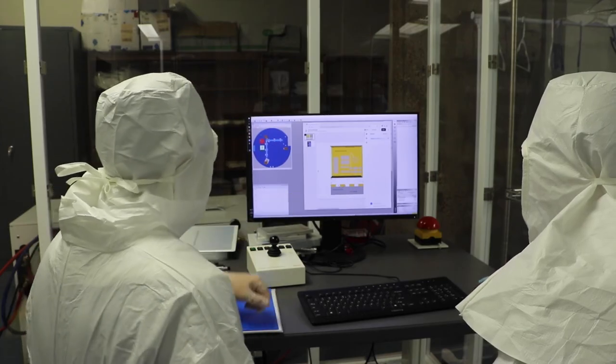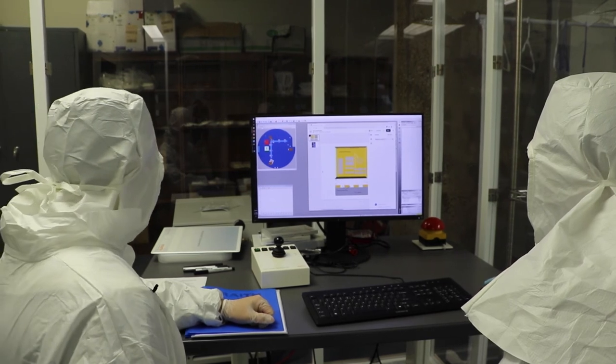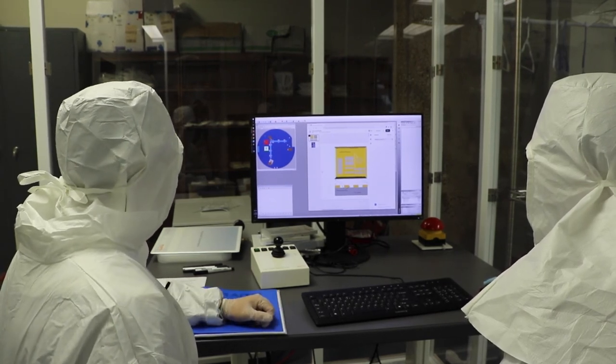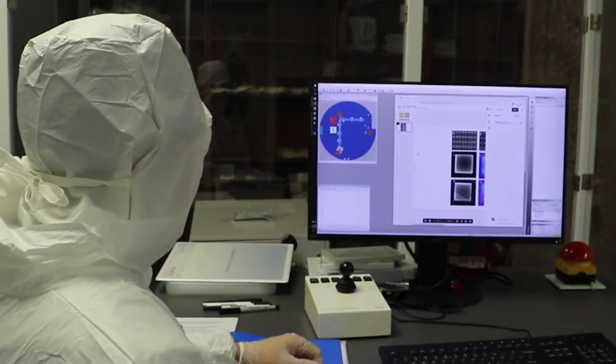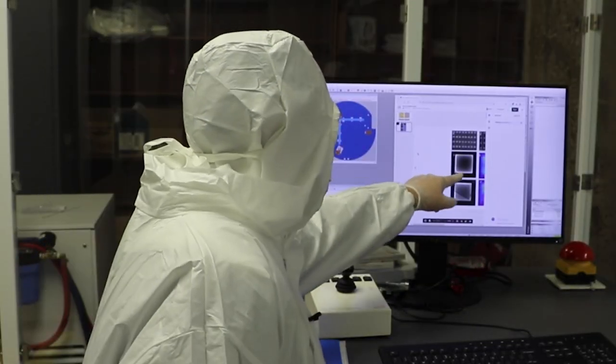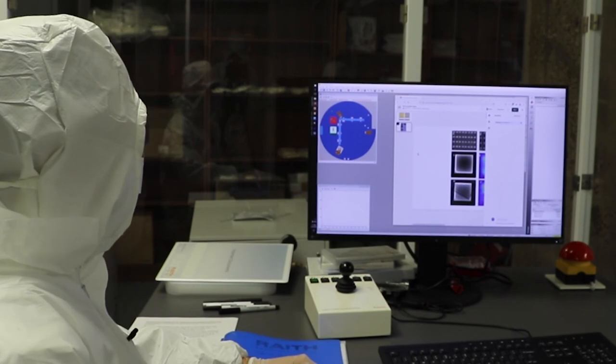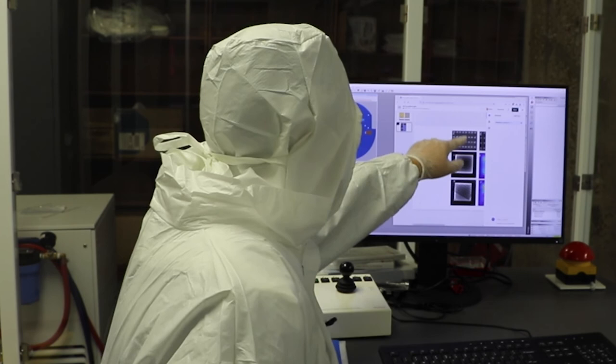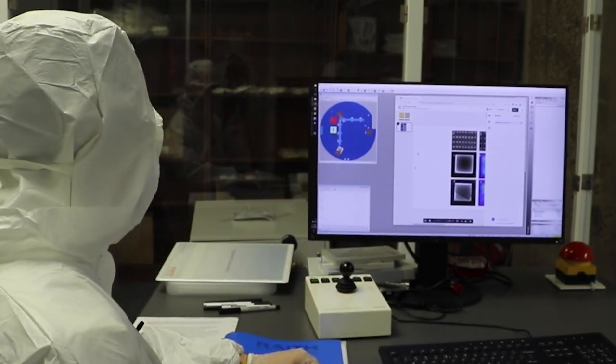To image the patterns, the sample is inserted into the microscope again and an image is taken with the scanning electron microscope. The scanning electron microscope uses the electron beam to image the surface of the material and then you can see the structures that we just milled with the e-beam lithography system.